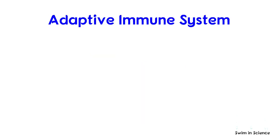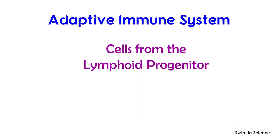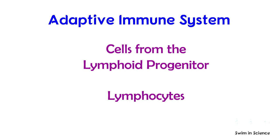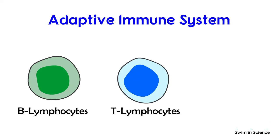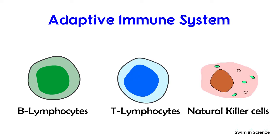The adaptive immune system comprises cells from the lymphoid progenitor, and these cells are called lymphocytes. There are three populations of lymphocytes: B lymphocytes, T lymphocytes, and natural killer cells.